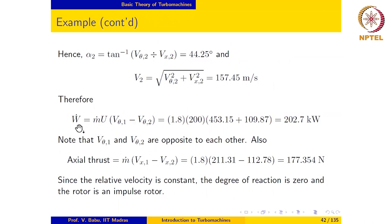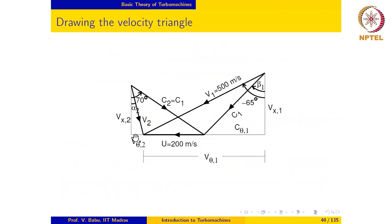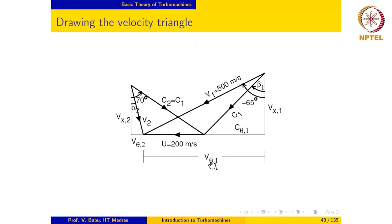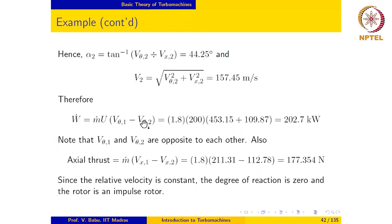The power produced by the rotor is given by the Euler turbine equation: P equals ṁ·u·(v_θ1 minus v_θ2). However, notice that v_θ2 here is in the opposite direction to v_θ1, meaning both v_θ1 and v_θ2 contribute to the torque on the rotor in the same sense, so the expression becomes ṁ·u·(v_θ1 plus v_θ2). The power produced by the rotor comes out to 202.7 kW. This reflects the earlier point that the negative sign applies only when v_θ1 and v_θ2 contribute to torque in opposite senses; otherwise they are added together.